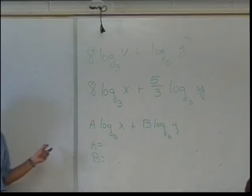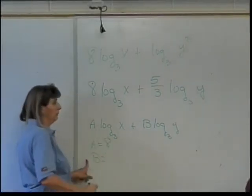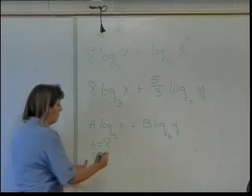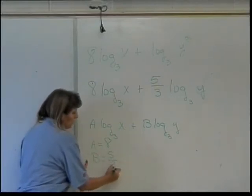What's A? Eight. Eight. And what's B? Five-thirds. So that one was easy.